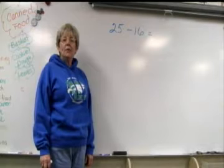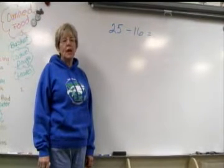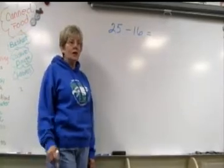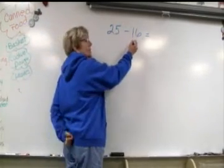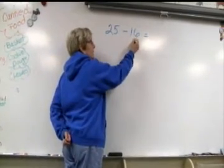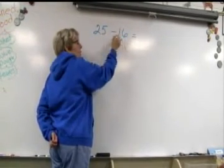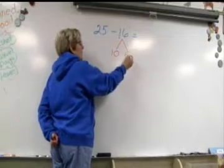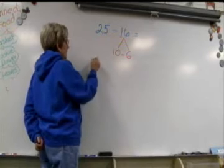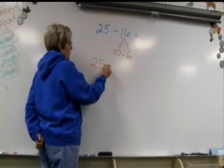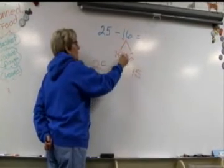I'm a second grade teacher, and I'm going to show a strategy that involves decomposing the numbers — or breaking them apart into tens and ones. So on 25 take away 16, I would first have my students decompose 16 into 10 — which they know is actually 10 and not a 1 — and 6. So 16 equals 10 plus 6. Then we would take 25, subtract 10, which equals 15, and I have them cross it out.